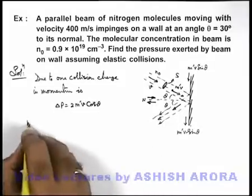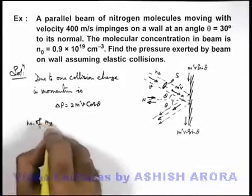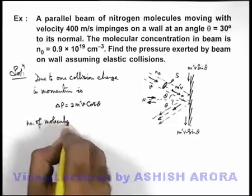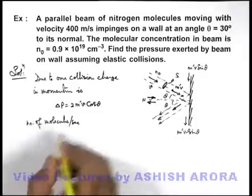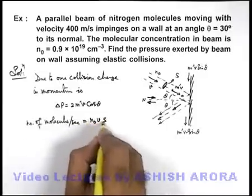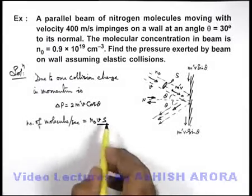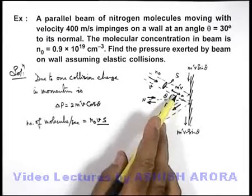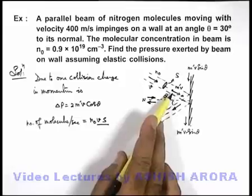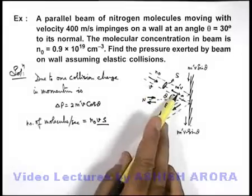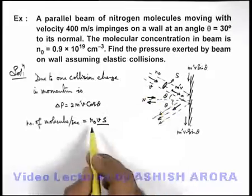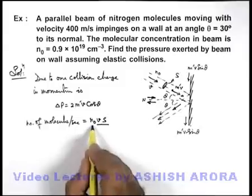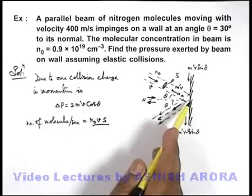If we talk about number of molecules striking per second, this can be written as n₀vS. As vS is the volume in a beam per second, or the flow rate of molecules in a beam with which the molecules are travelling. n₀ is the molecular concentration though these much number of molecules are striking per unit time.